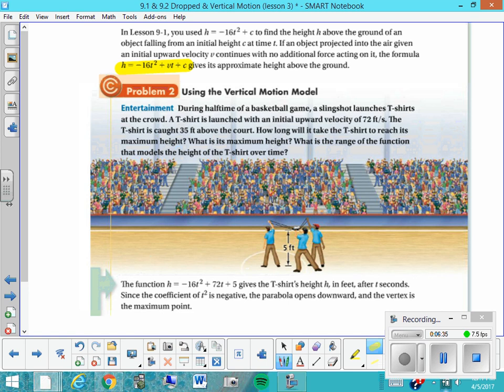During halftime at a basketball game, a slingshot launches t-shirts at the crowd. A t-shirt is launched with an initial upward velocity of 72 feet per second, and the t-shirt is caught 35 feet above the court. How long will it take the t-shirt to reach its maximum height? What is the maximum height? What is the range of the function that models the height of the t-shirt over time? Okay, so here we go, and you can see that we've plugged into the given function. We've plugged in our initial upward velocity, and this 5 here is the starting height of the t-shirt when you can see these guys launching it from the t-shirt slingshot.